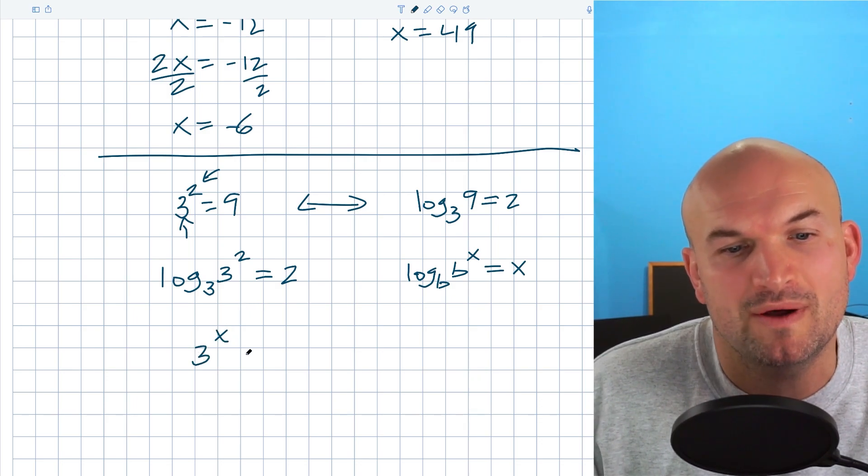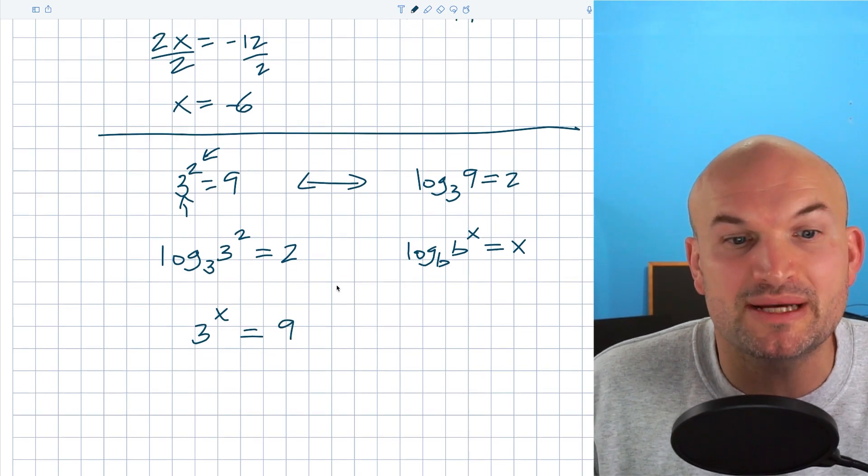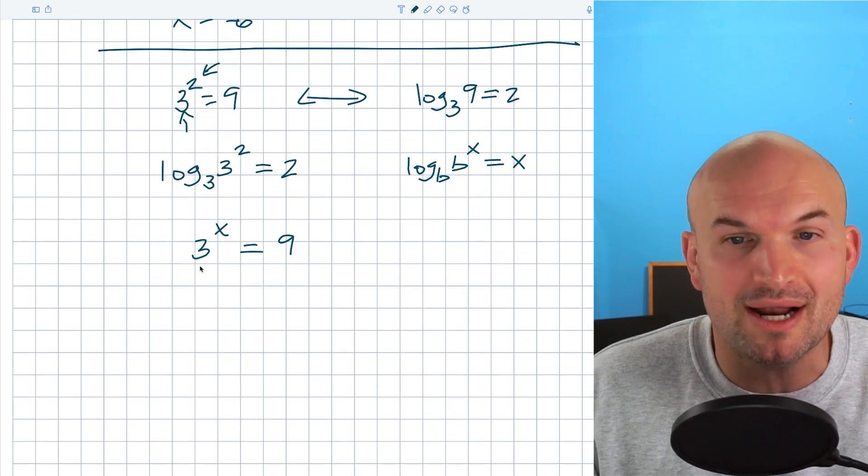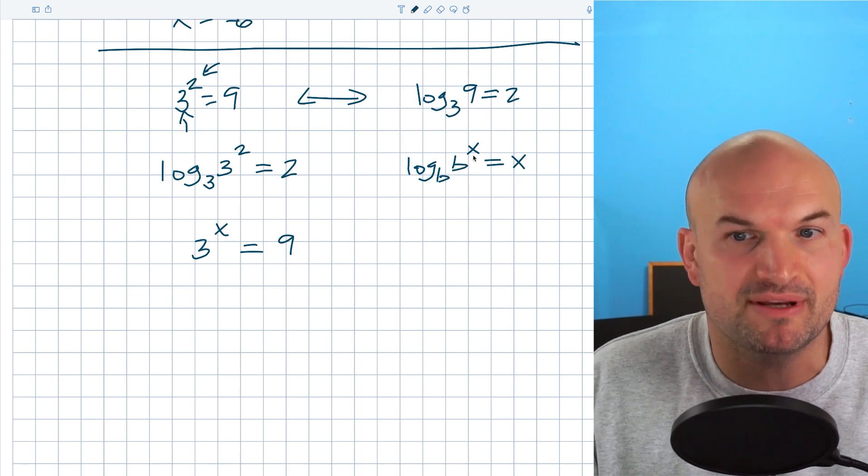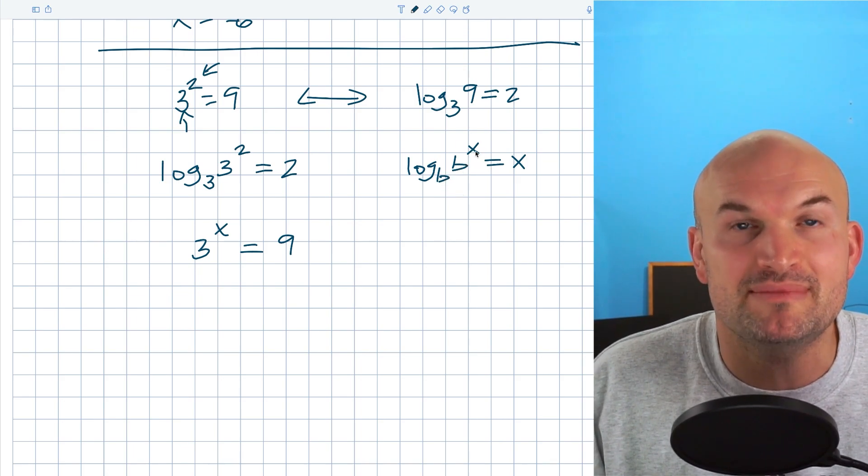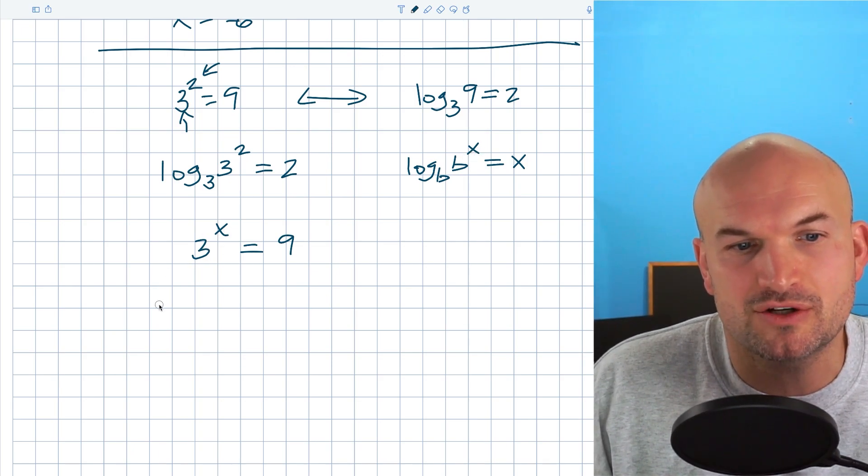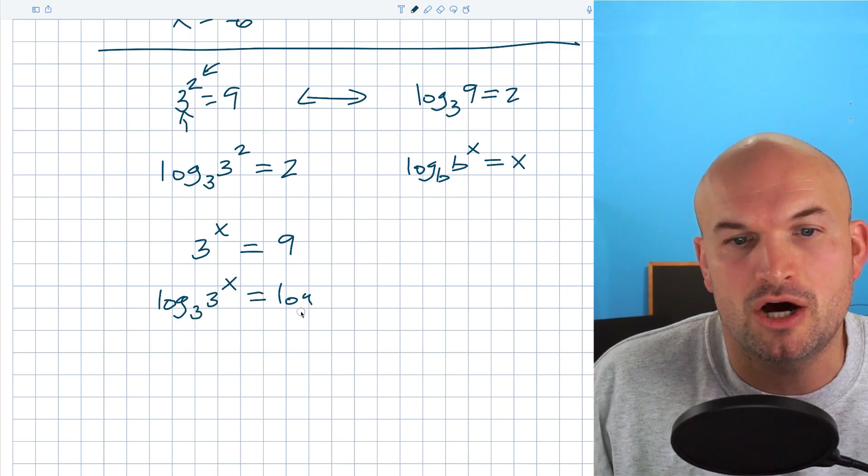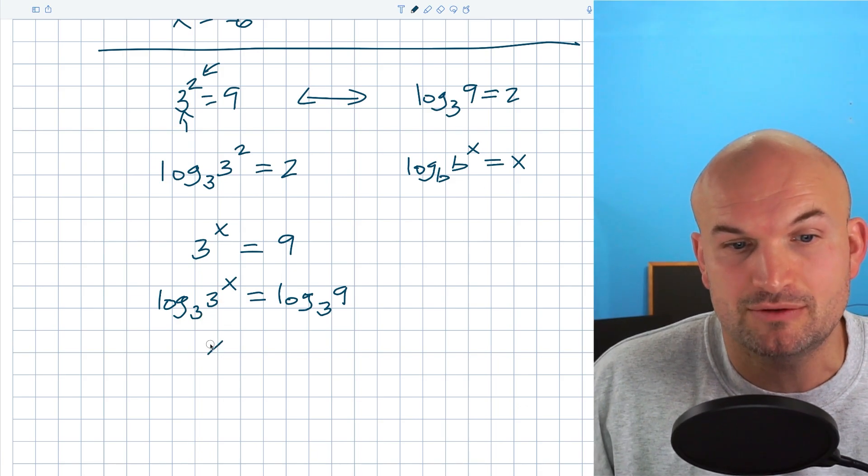So let's just pretend we did not know what that answer was. 3 raised to some power is going to equal 9. What we could do is we could take the logarithm of both sides. Now, we want to take the logarithm of the same base as the exponent because what that's going to do, that's going to eliminate me solving for x as an exponent. So I'll go ahead and take the log base 3 of 3 to the x equals log base 3 of 9. Now, using this rule, we recognize is equal to x.